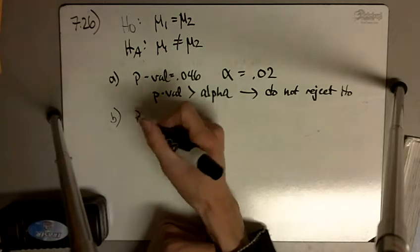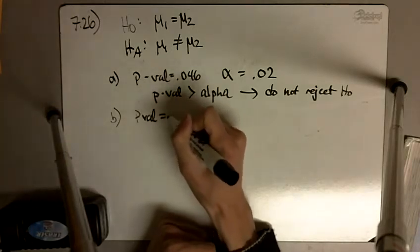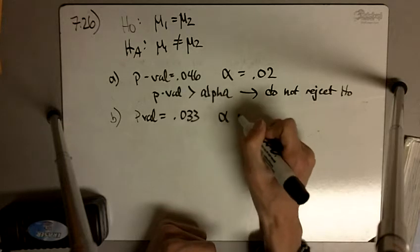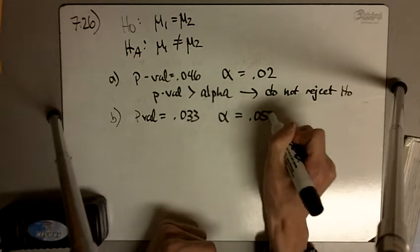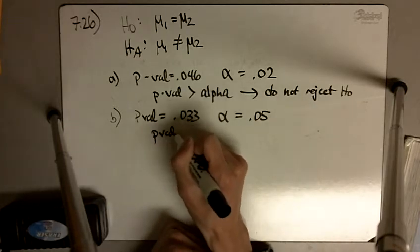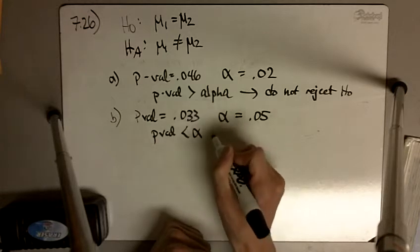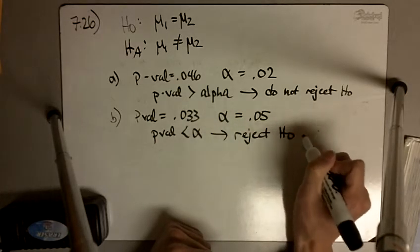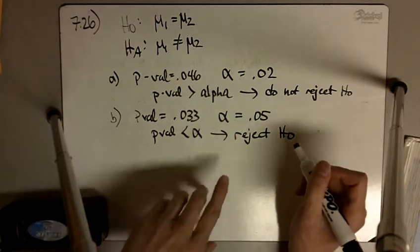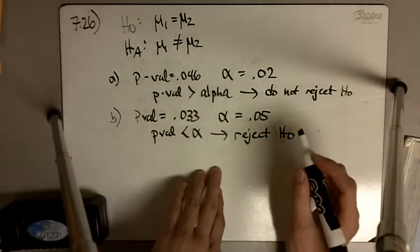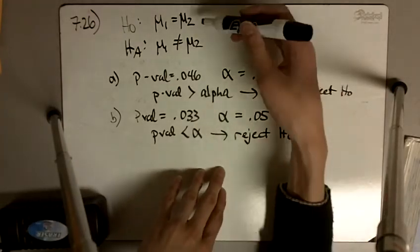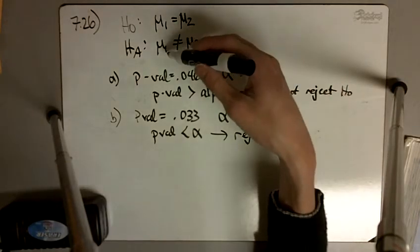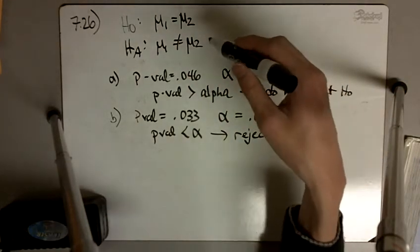Part B: p-value is equal to 0.033 and our alpha is equal to 0.05. Here our p-value is less than alpha, so we reject the null hypothesis. This means we have evidence to show that μ1 does not equal μ2, and we must conclude that μ1 is different from μ2.